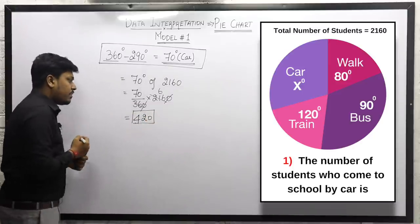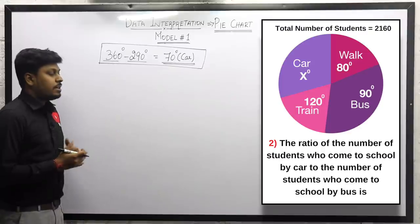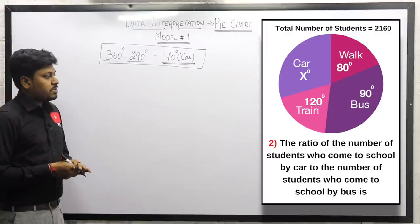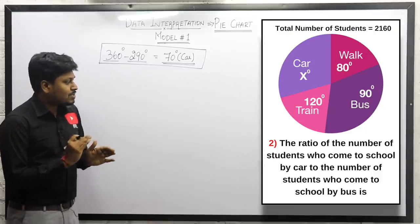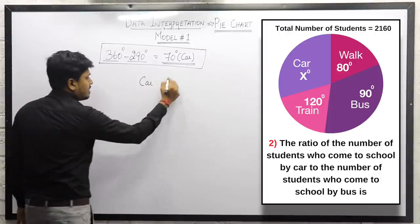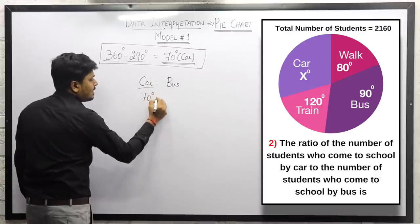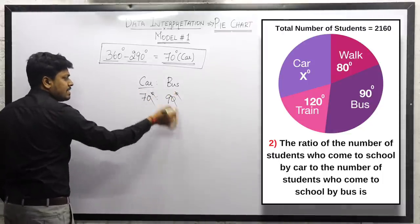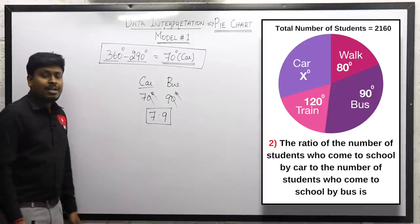The answer to question 1 is 420 students coming to school by car. Question 2: Find the ratio of students coming by car to students coming by bus. Car is 70 degrees and bus is 90 degrees. Canceling the degree symbol and the zeros gives us 7 is to 9.